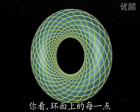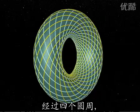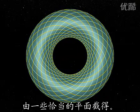You see, through each point on the torus of revolution, one can draw four circles, obtained by suitable slices.